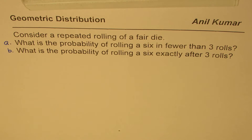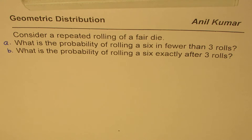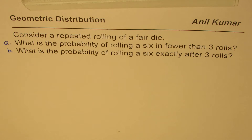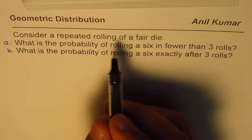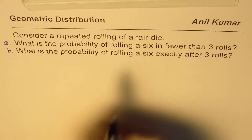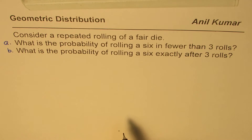I am Anil Kumar and here is an example on geometric distribution. Consider a repeated rolling of a fair die. What is the probability of rolling a six in fewer than three rolls? Part B is what is the probability of rolling six exactly after three rolls? These are all independent events with success or failure as the two outcomes — n Bernoulli rolls.